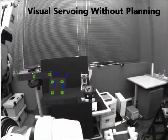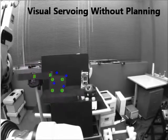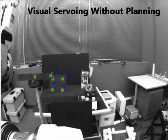Without planning, visual servoing needs to be stopped as the obstacle image gets too close and visual occlusion is about to happen.